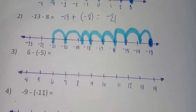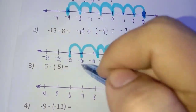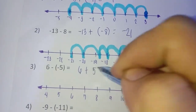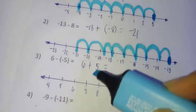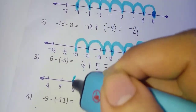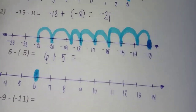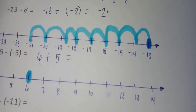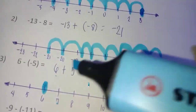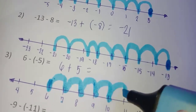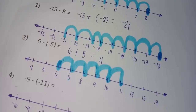Example 3: six minus negative five. We rewrite this as six plus positive five. Locate six on the number line. Since the second addend, five, is positive, we move five units to the right: one, two, three, four, five — and the answer is eleven. Hence, six minus negative five equals eleven.